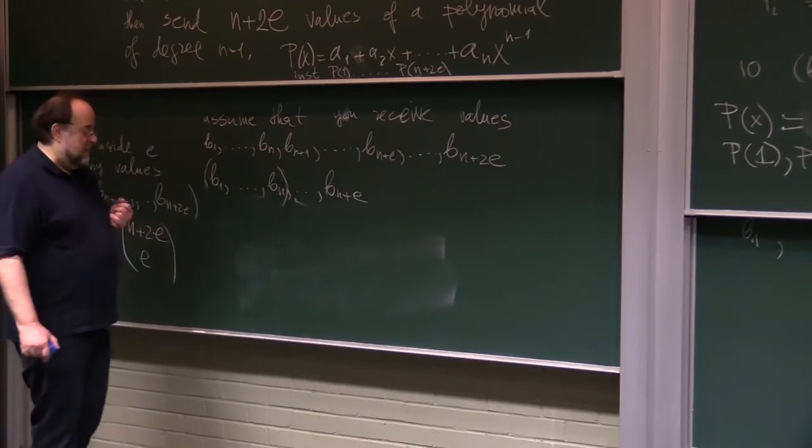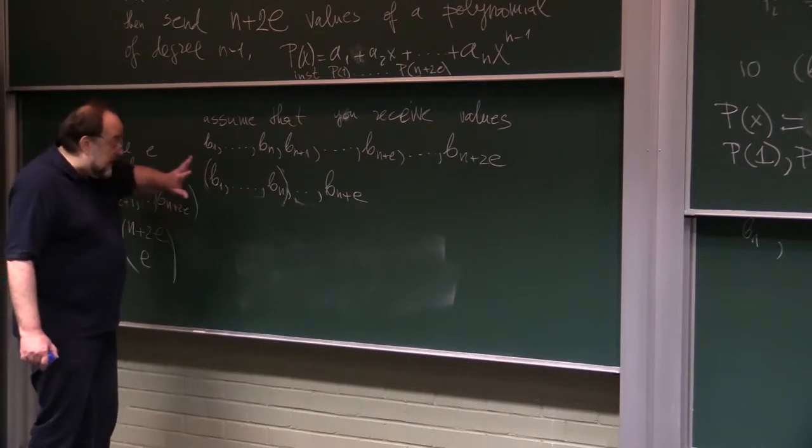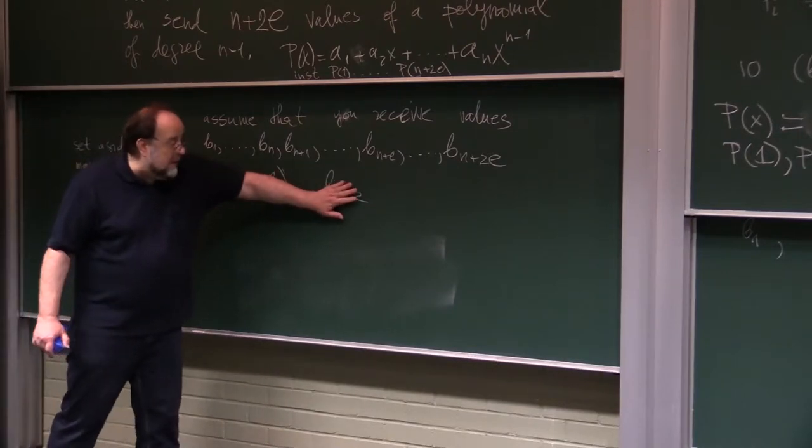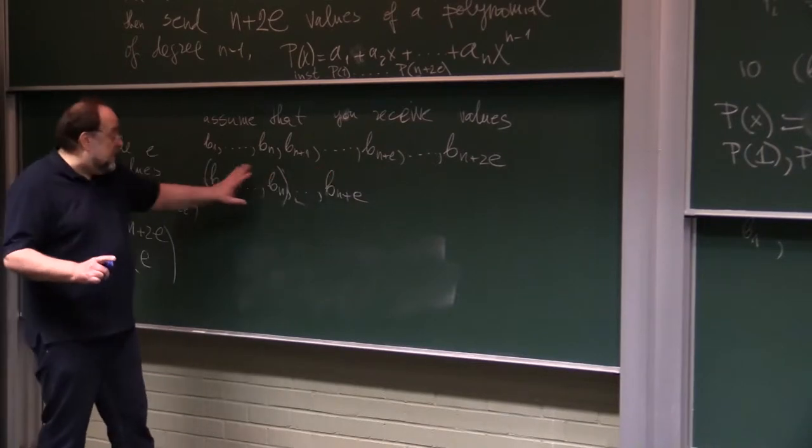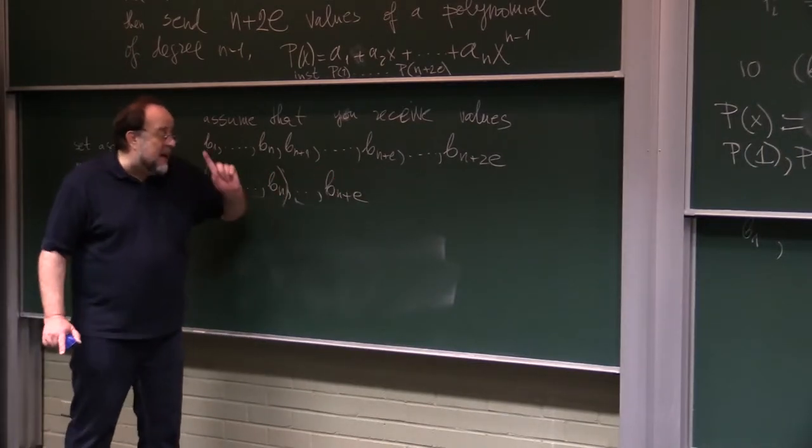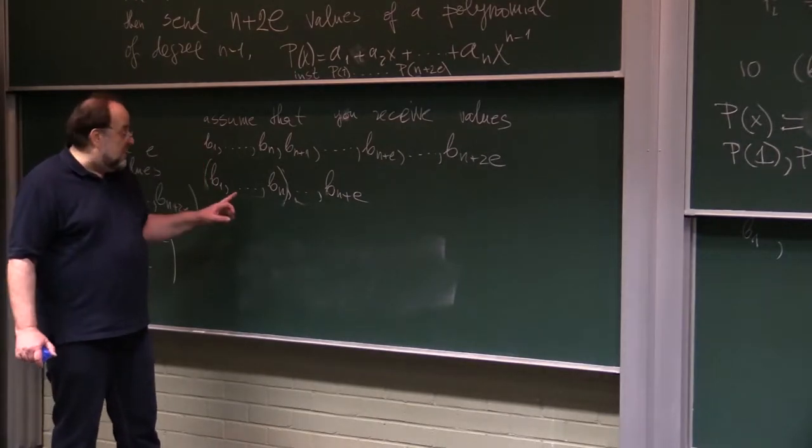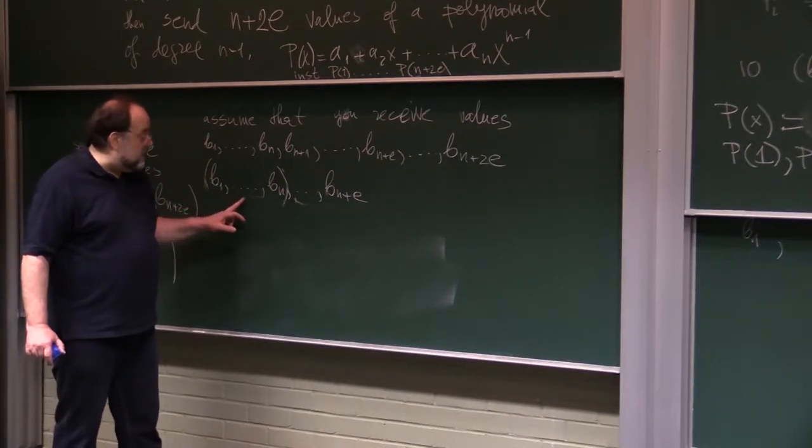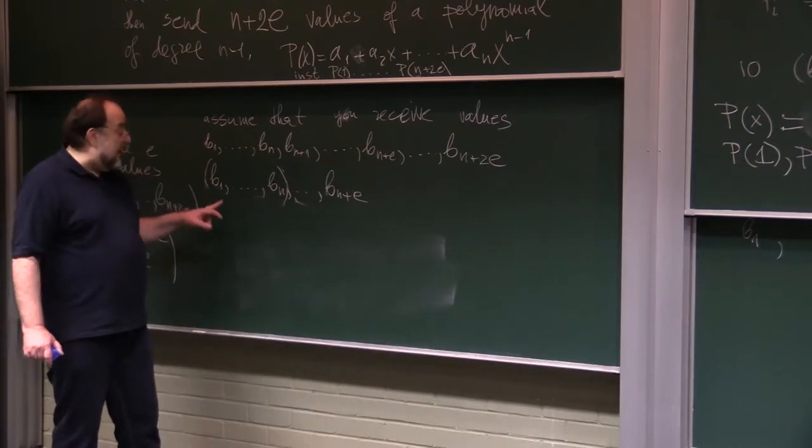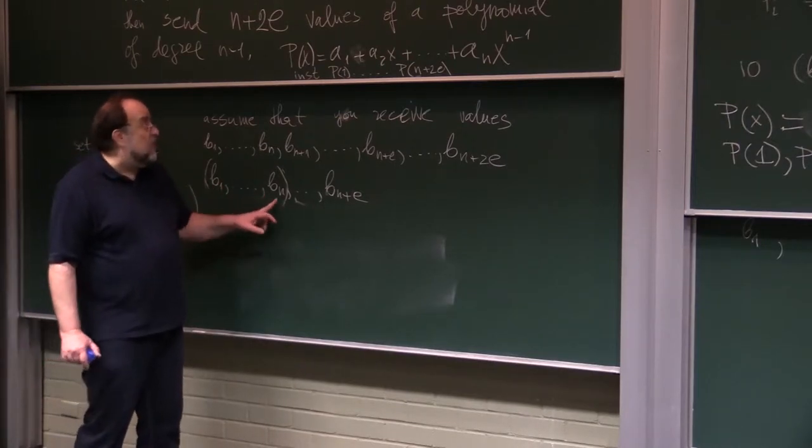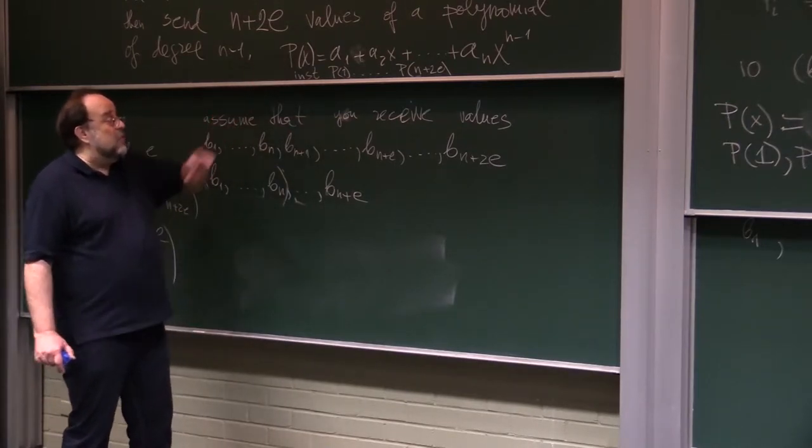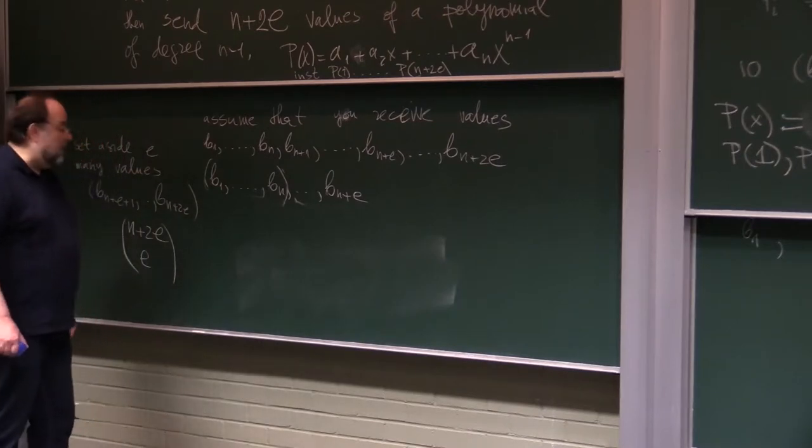So if there is a polynomial that fits all of these values, the only polynomial that fits all of these values is polynomial p. Because given the number of errors, sufficient number of values, namely n values are correct, thus they have to determine polynomial p.